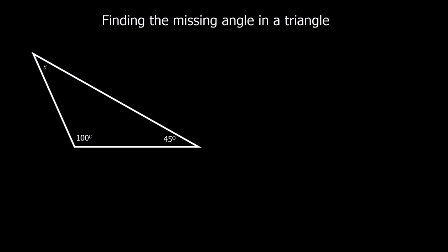This video is about finding the missing angle in a triangle. What you need to know is angles in a triangle always add up to 180 degrees. So these three angles have got to add up to 180 degrees.